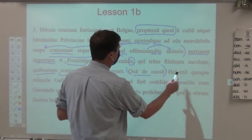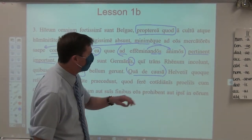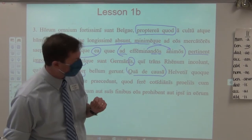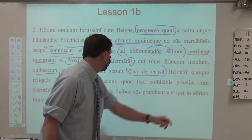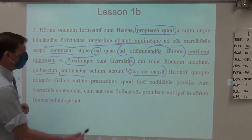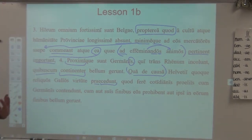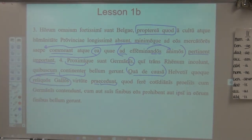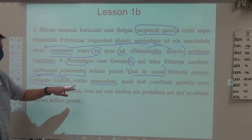'Qua de causa' — concerning this cause, concerning this reason, concerning which reason or cause — the Helvetii, who are living in modern-day Switzerland, right at the north of modern-day Italy but in Gaul in ancient Roman times, also precede. This verb is 'praecedere' — 'caedere' with a 'prae' on the front, meaning to go before. They precede the remaining Gauls — we're going to see 'reliquus, reliqua, reliquum,' meaning the remaining ones, the leftover ones — in their virtue.